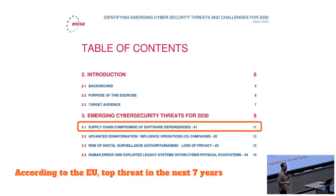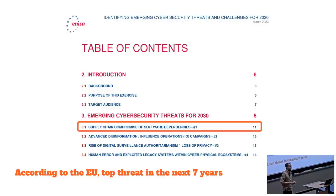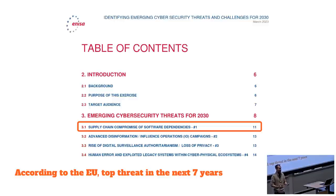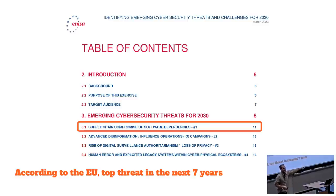It's not just this one study — this pops up everywhere. There's an organization called ENISA, the European Union Agency for Cybersecurity. They ran a survey this year where they tried to figure out, on behalf of the EU, what are the biggest cybersecurity threats for 2030. The number one thing is supply chain compromise of software dependencies. And that's what we're going to talk about today.